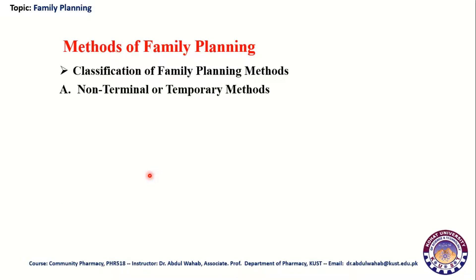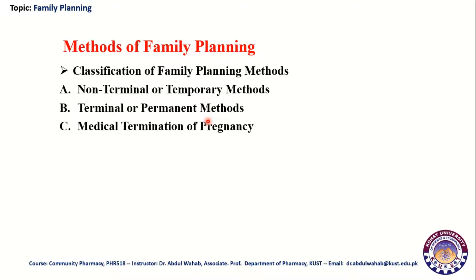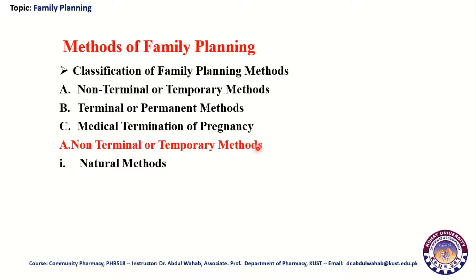The main categories of family planning methods are: first, non-terminal or temporary methods; second, terminal or permanent methods; and third, medical termination of pregnancy. These are the three main categories of family planning methods, and these methods are further divided into subtypes. Non-terminal or temporary methods are further divided into two main types: natural methods and spacing methods.